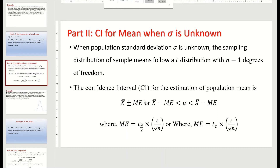To find the confidence interval for the population mean, our confidence interval is always the sample mean plus or minus the margin of error. This is the same as saying the true population mean mu lies between the sample mean minus the margin of error and the sample mean plus the margin of error.